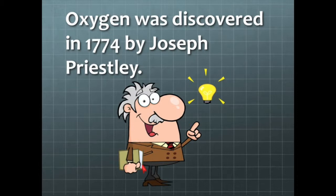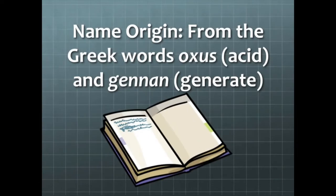Oxygen was discovered by Joseph Priestley in 1774. The name originates from the Greek words oxus for acid and genin for generate.